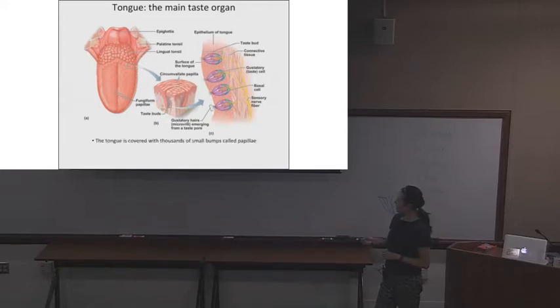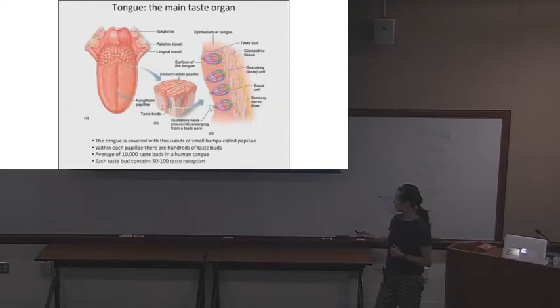Okay, so yeah, this is what I was just saying. The tongue is covered with thousands of little small bumps. Each papillae, there are hundreds of taste buds on them. And humans have about 10,000 taste buds on their tongues. And each taste bud contains about 50 to 100 taste receptors.